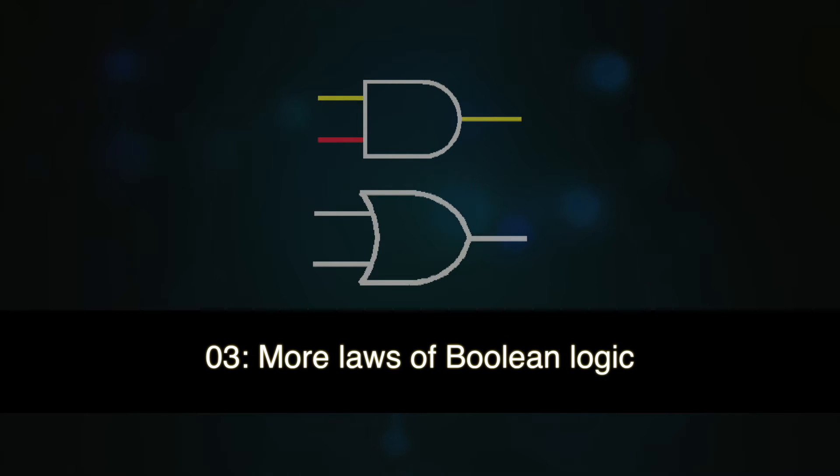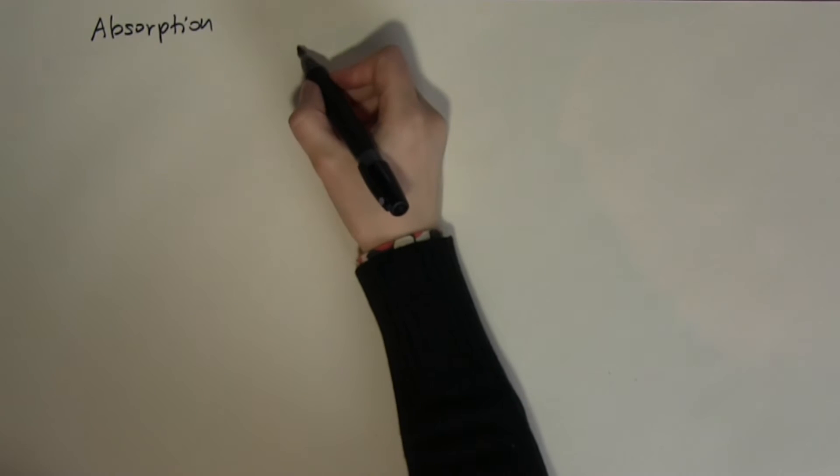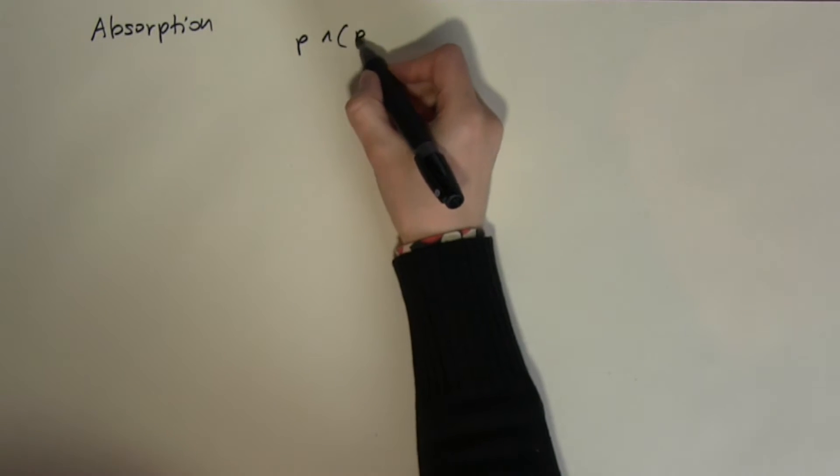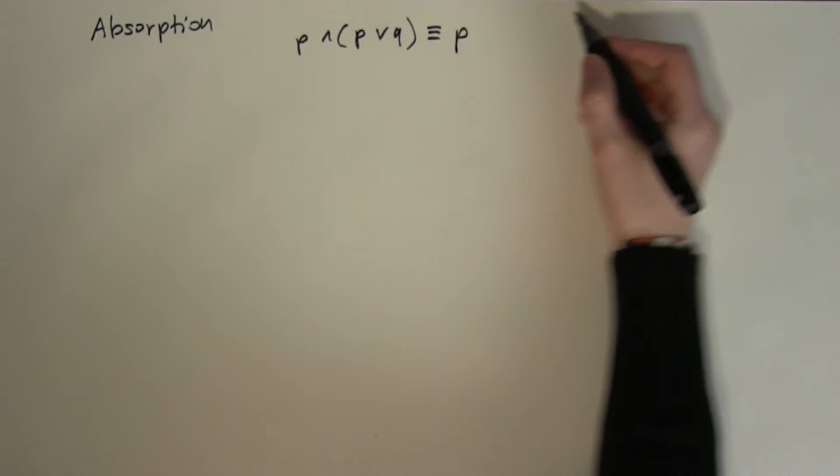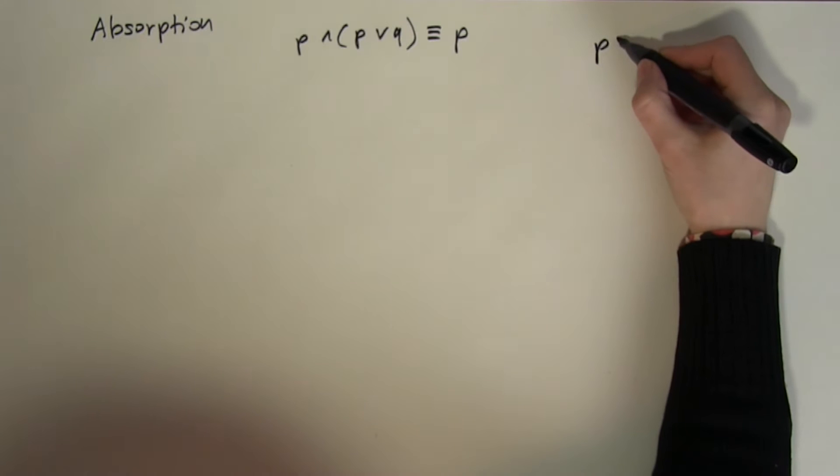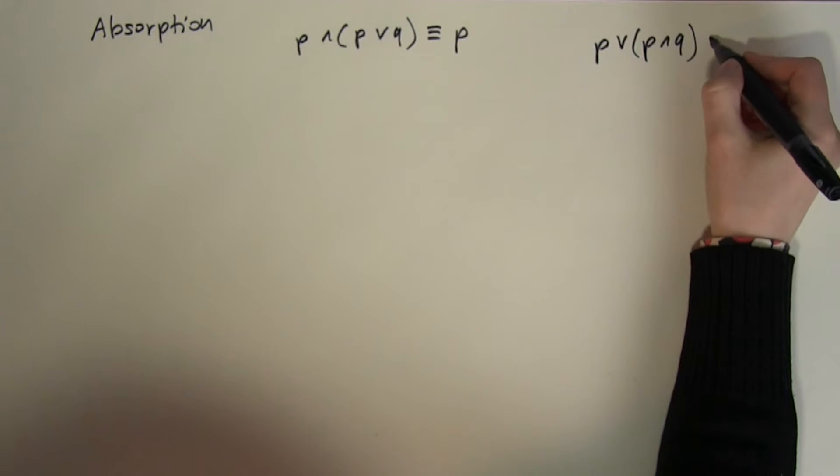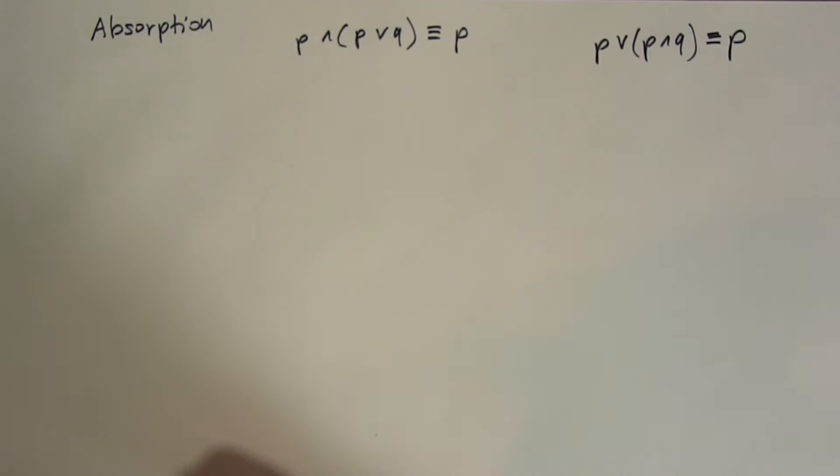Welcome to the next video on the laws of logic. In this video I will introduce you to more of the laws of logic. The next law is the absorption law and the absorption law states that P and P or Q is the same as P, or P or P and Q is the same as P. Now what is actually going on in here?